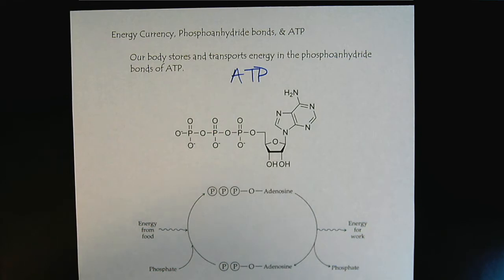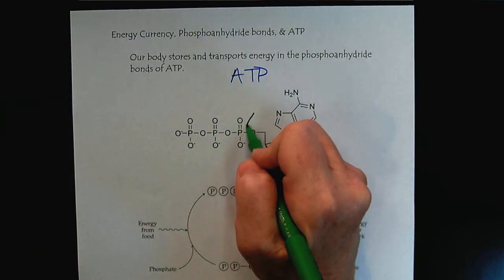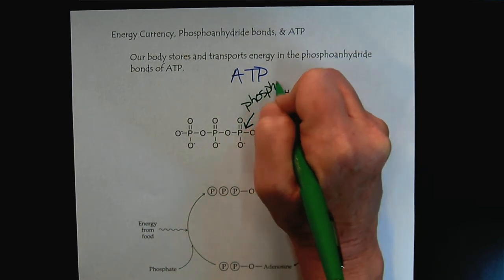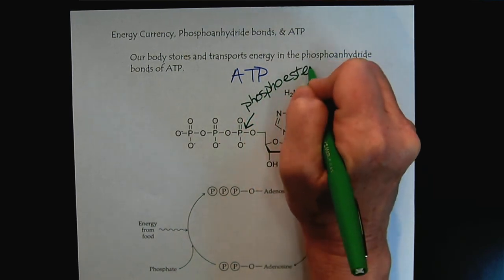And so when we're looking at ATP, here is the phosphoester bond. And this is a stronger bond. This bond is not going to break very easily.